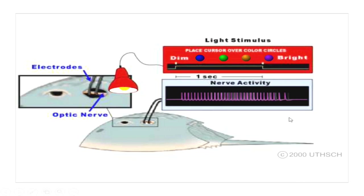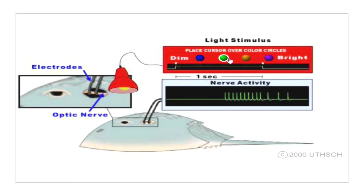This told Hartline three very profound aspects of how the nervous system uses electricity to encode and transmit information. The first observation is that these spike-like events — called action potentials, or impulses — are elicited in an all-or-nothing fashion. Either you have an action potential or you don't. The other thing of note is that although it's difficult to see at this timescale, the duration of the action potential is very, very brief — only about one millisecond or so.